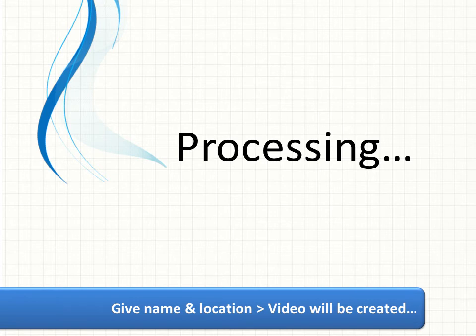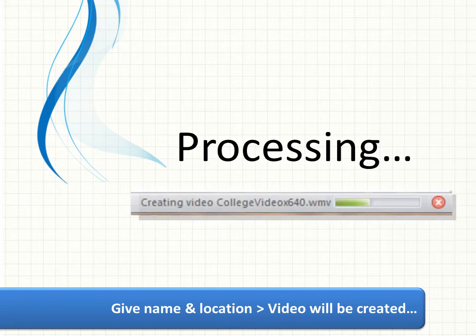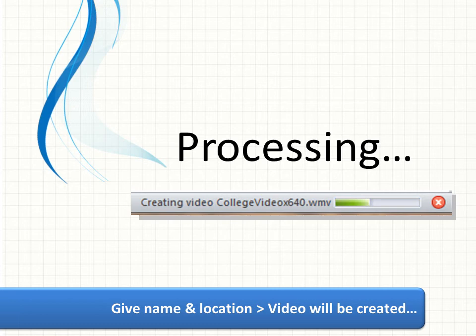The first thing you do is give a name and a location to your video — a typical Windows operation where you tell it what to call the file. It's wise to name it with a size as part of the name, like 640 or 920, and so forth. Then you will see the Creating Video dialog in the status bar of PowerPoint. It will take a good long time depending on how long the video is and what resolution you've chosen. It will max out your computer's processor — it's a processor-intensive activity — so just leave your computer alone while it's creating the video.